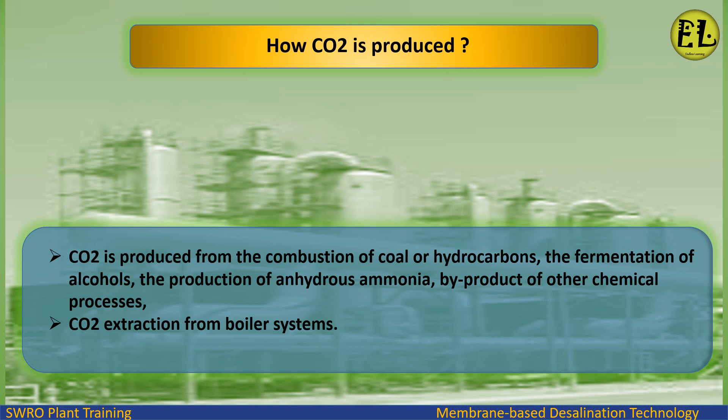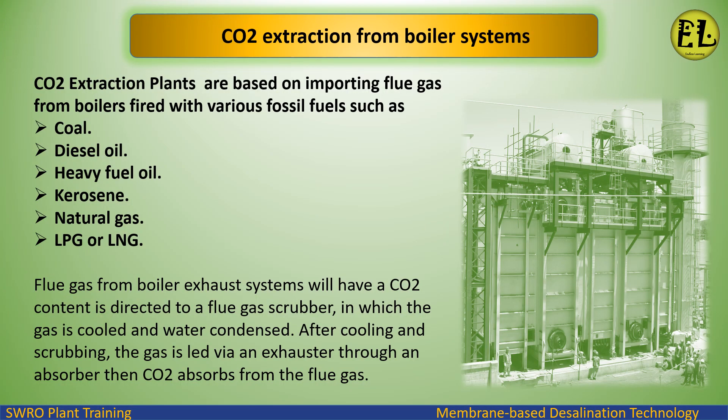CO2 extraction plants are based on importing flue gas from boilers fired with various fossil fuels such as coal, diesel oil, heavy fuel oil, kerosene, natural gas, LPG, or LNG. The flue gas from boiler exhaust systems, which has a CO2 content, is directed to a flue gas scrubber where the gas is cooled and water is condensed. After cooling and scrubbing, the gas is led through an absorber where CO2 is absorbed from the flue gas.